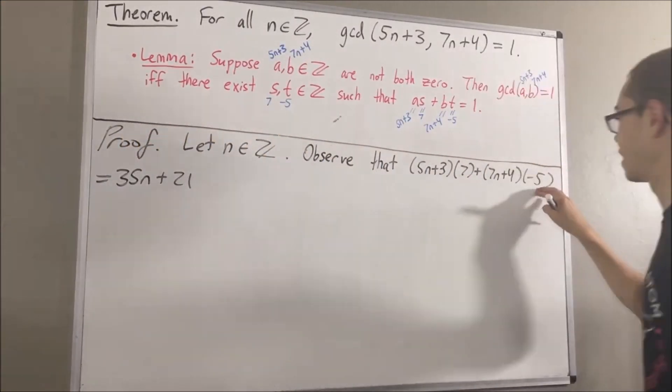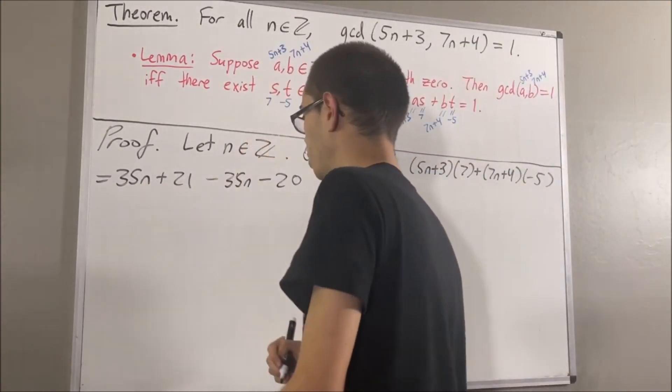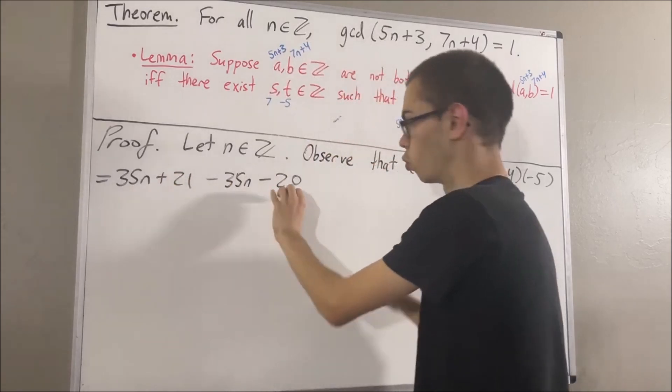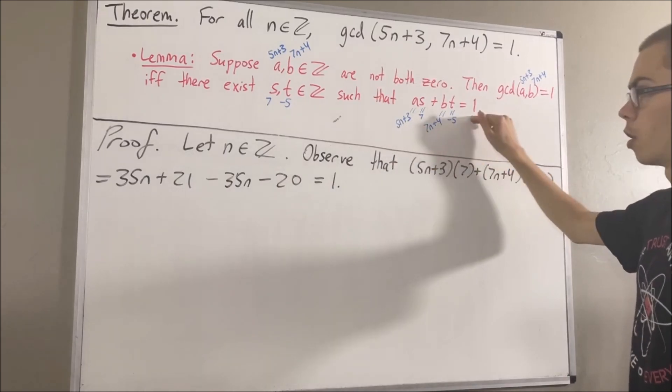And if we distribute the negative 5 across this parentheses, we get minus 35n minus 20. We see that the 35n's cancel out. 21 minus 20 leaves us with 1. So, this does in fact simplify down to 1.